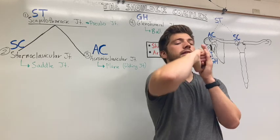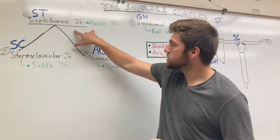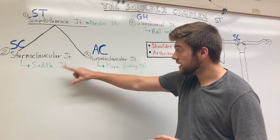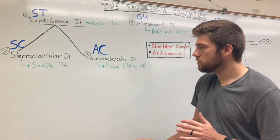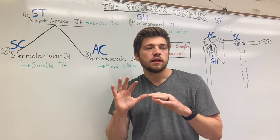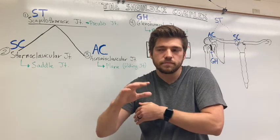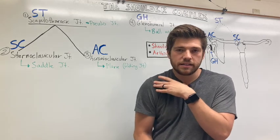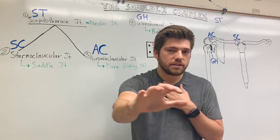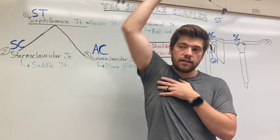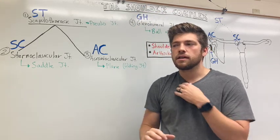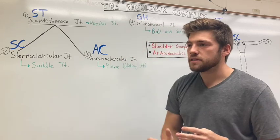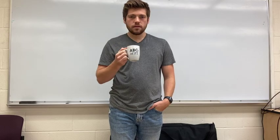The scapulothoracic joint is a pseudo joint — it's kind of made up because anything it does is just a combination of what the SC joint does and what the AC joint does. For example, for scapulothoracic protraction, the scapula moves around the ribcage, with the AC joint doing a little internal rotation to help. So it's SC joint protraction plus AC joint internal rotation for protraction, and the opposite for retraction. To get the arm all the way above the head, scapulothoracic upward rotation is a combination of SC elevation and AC upward rotation, with the opposite for downward rotation.